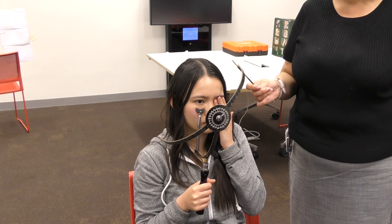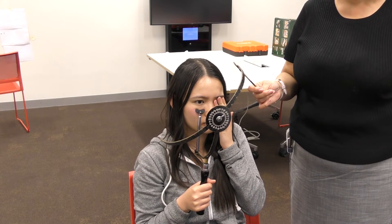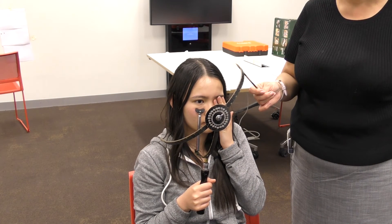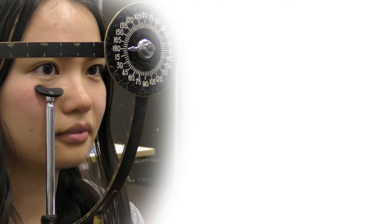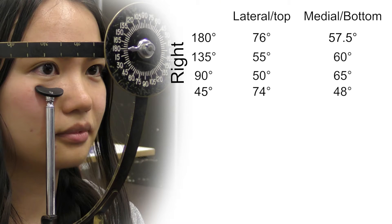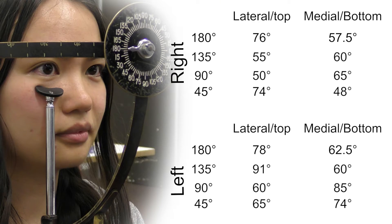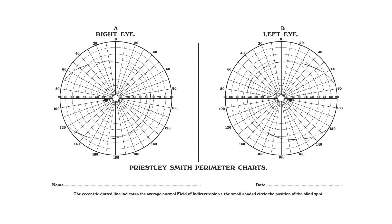Since you won't have one of these hand perimeters to use at home, here's an example set of data which we want you to use. We've also provided a link to a scoring sheet, and you should take this example data and plot it onto the scoring sheet in order to map out the visual field for both eyes.